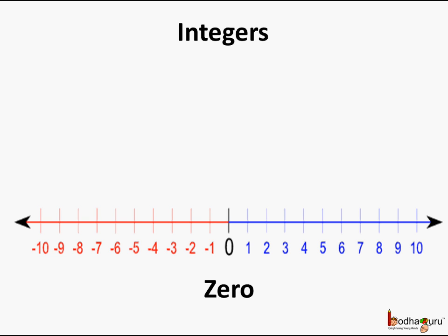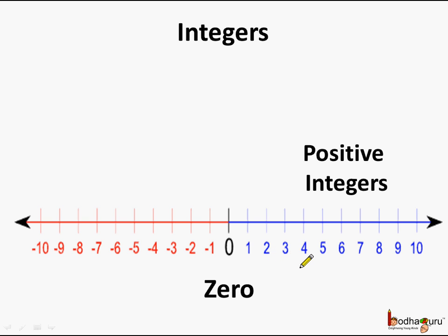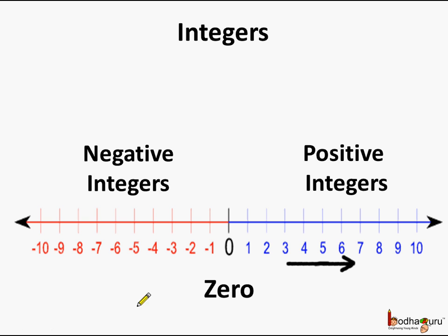Integers is a collection of numbers which consists of zero and the counting numbers — that is positive integers like 1, 2, 3, 4 and so on — and the negative numbers which are called negative integers, such as minus 1, minus 2, minus 3, minus 4, etc.